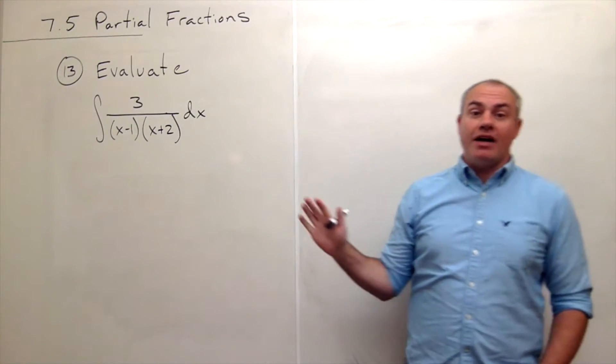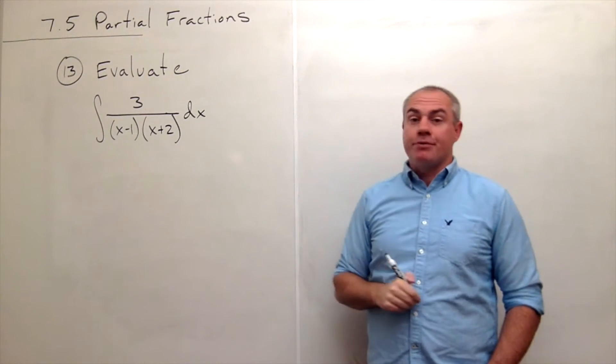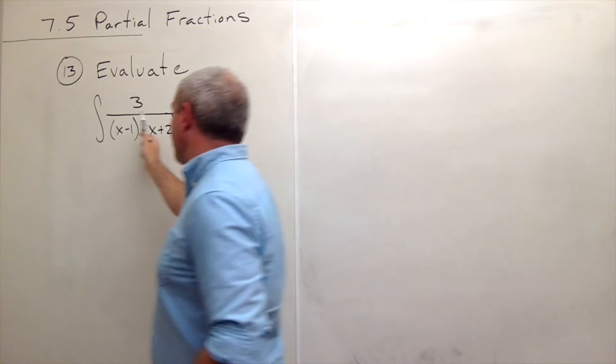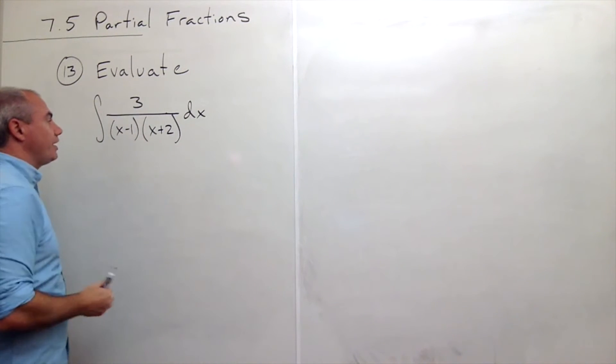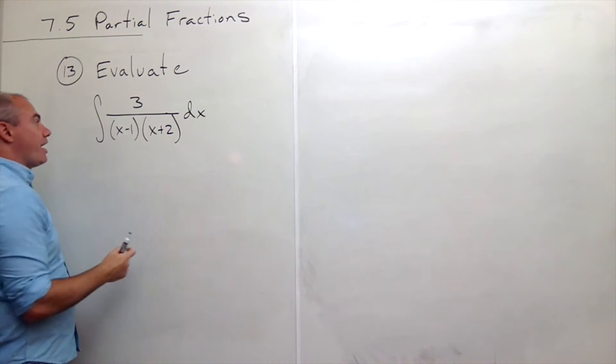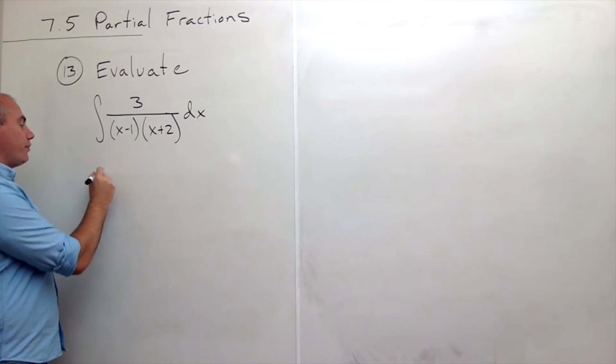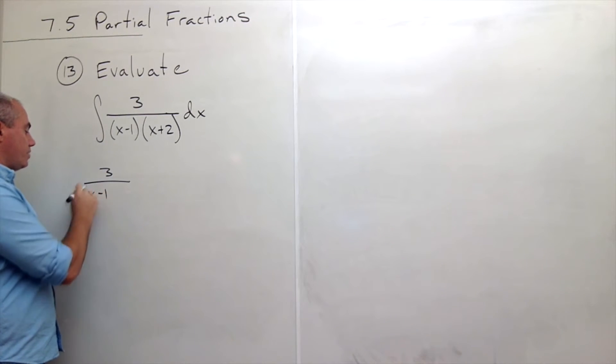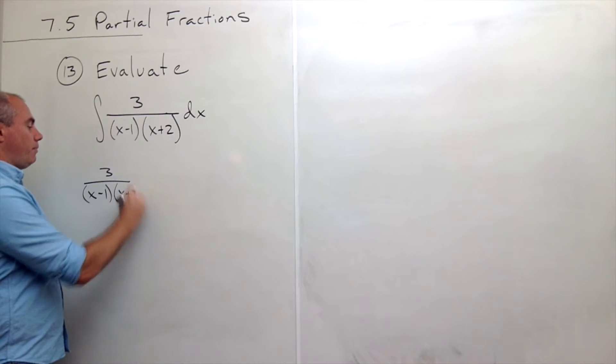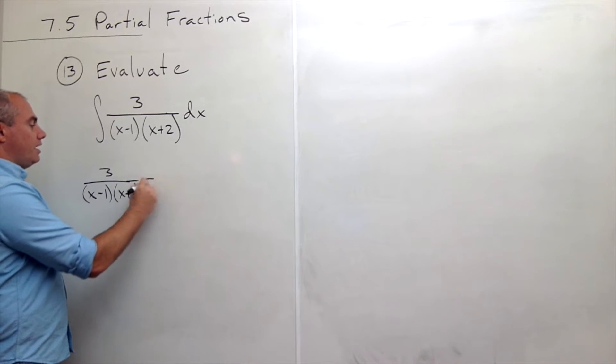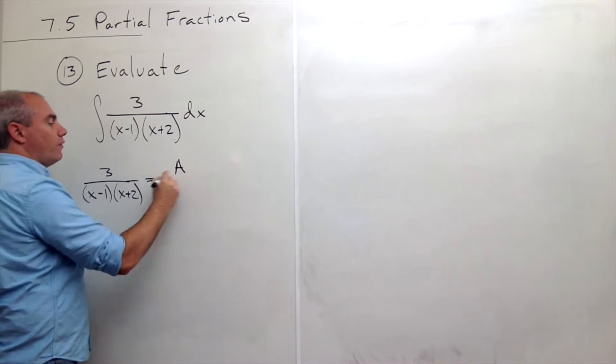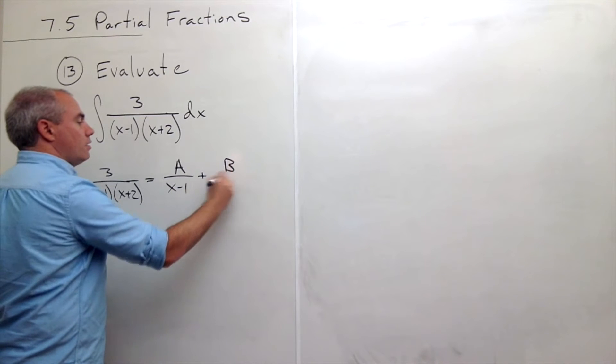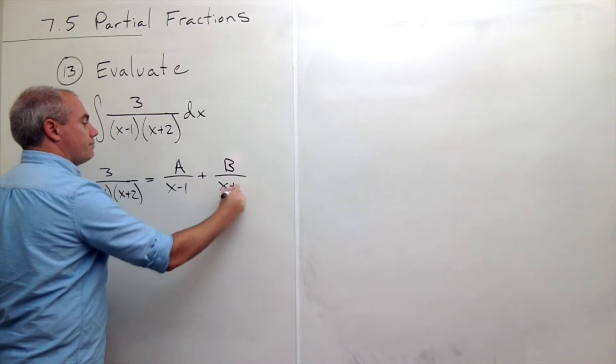To evaluate this integral, we're going to break it up using partial fractions. Notice that the bottom of this fraction is already fully factored out, so I can already write it into its decomposition. It's x minus 1 times x plus 2 on the bottom, 3 on the top, and that's going to look like A over x minus 1 plus B over x plus 2.